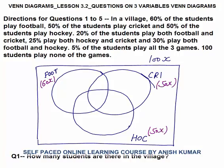20% of the students play both football and cricket. The common region of football and cricket — marked in red — has two parts: x and y. The total of x plus y equals 20x, since 20% of 100x is 20x. We don't know the individual values of x and y yet, so we leave that part.